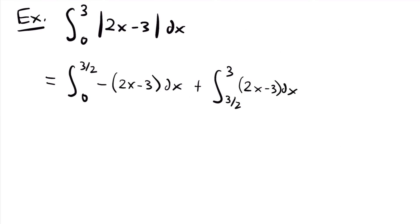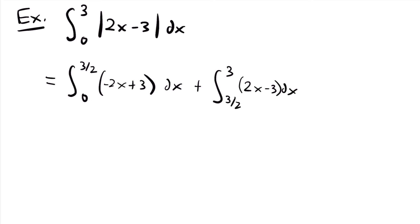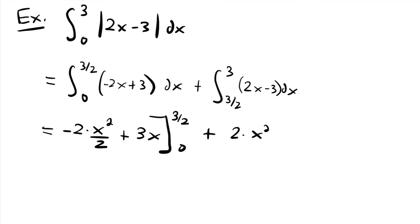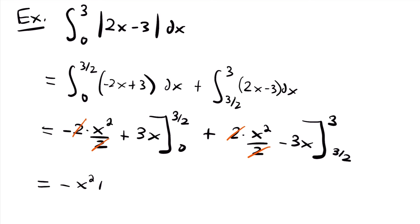Let's distribute the negative in the first integral: negative 2x plus 3. Now we can integrate both functions. The first integral gives negative 2 times x squared divided by 2 plus 3x, evaluated from 0 to three halves. The second gives 2 times x squared divided by 2 minus 3x, evaluated from three halves to 3. The twos in each term cancel, so this simplifies to negative x squared plus 3x evaluated from 0 to three halves, plus x squared minus 3x evaluated from three halves to 3.